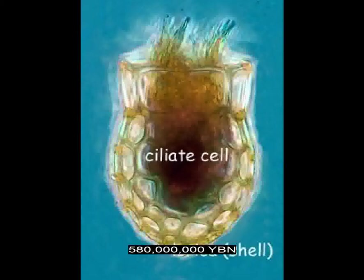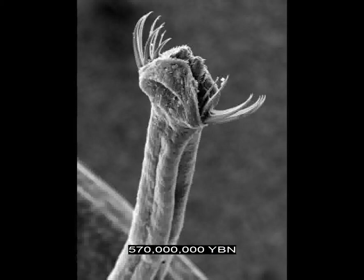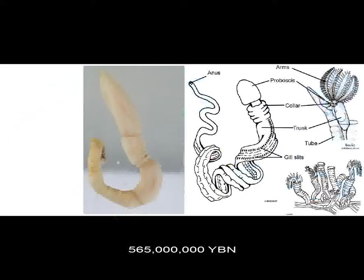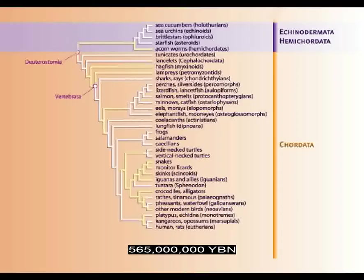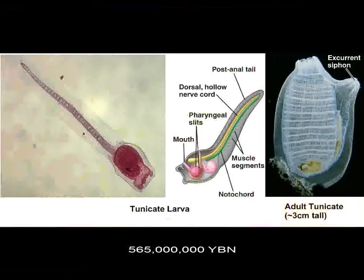Skeletons evolve independently in different groups. Bilaterians Chaetognatha evolve — arrowworms, earliest teeth. Animals start to eat each other; the evolution of teeth and animal predation starts an arms race that rapidly transforms ecosystems around the earth. Deuterostome hemichordates evolve — Pterobranchia, acorn worms. Adult pterobranches are sessile, fastening to solid structures, but the younger or larval form is free swimming and is thought to have evolved into tunicates and then the first fish. Deuterostome phylum Chordata evolves. Chordates are a very large group that include all tunicates, fishes, amphibians, reptiles, mammals, and birds.